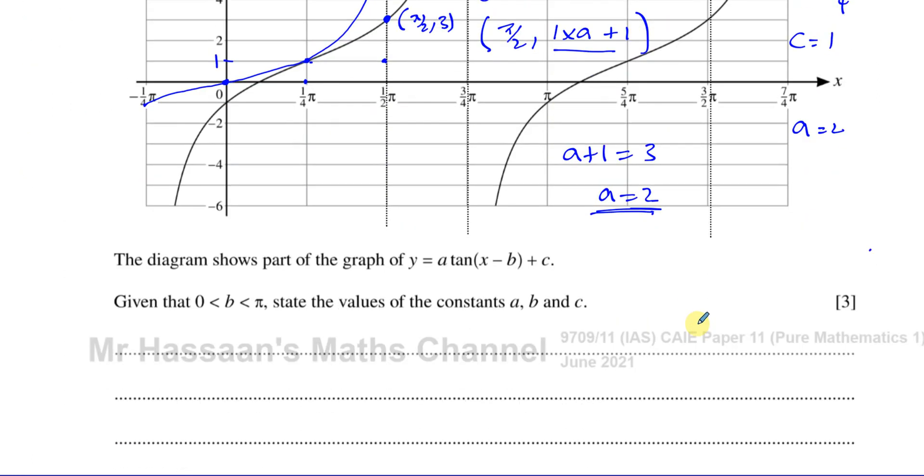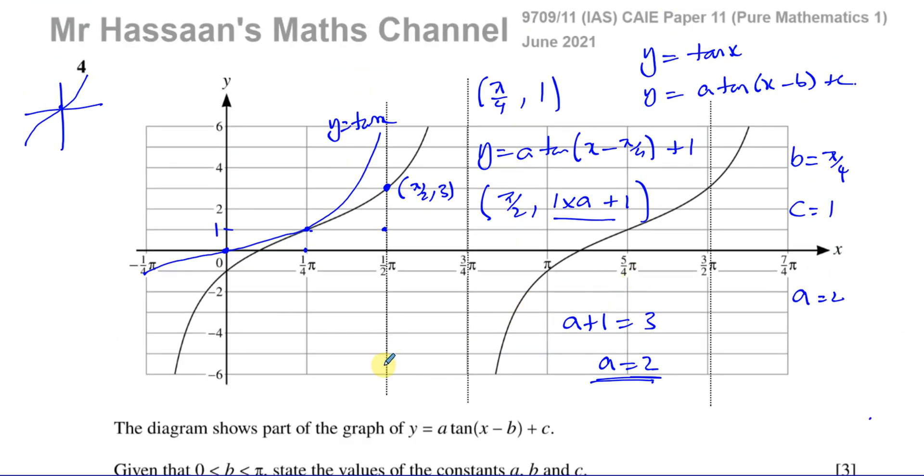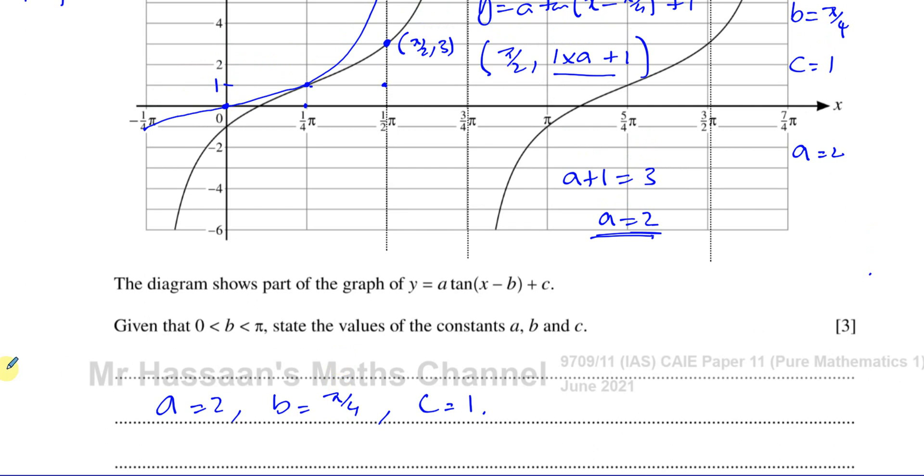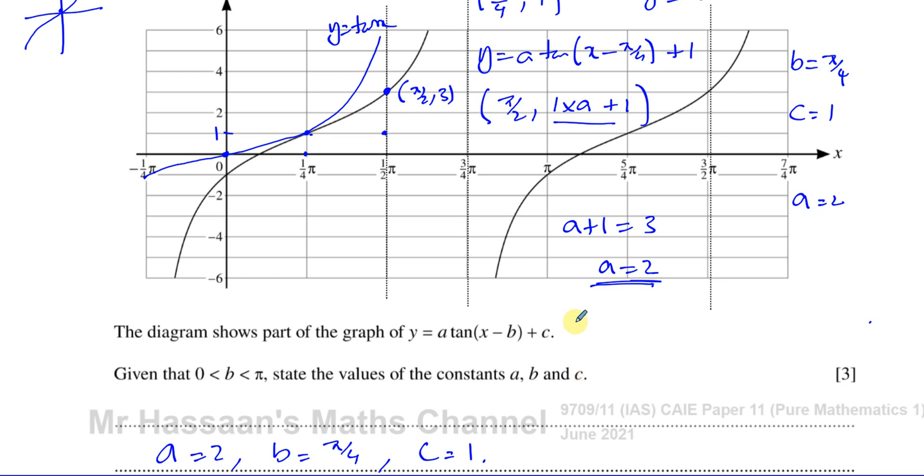Therefore we have a equals 2, and b equals pi over 4, and c equals 1. We can check to see if our answer is correct by choosing a point on the curve that we know its value. For example, I can choose pi over 4 and put it into this equation. Our equation would therefore be y equals 2 times tan of x minus pi over 4 plus 1.